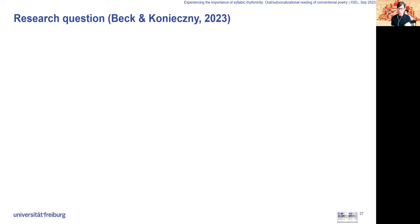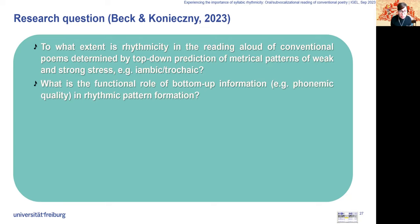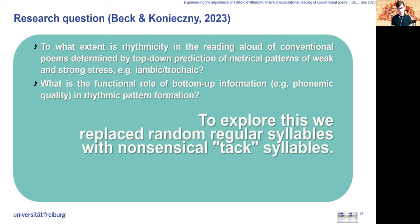We wanted to know to what extent is rhythmicity in the reading of conventional poems determined by top-down prediction of metrical patterns, and what's the functional role of bottom-up information in rhythmic pattern formation. To explore this, we replaced random regular syllables with nonsensical tag syllables. We use tag because it is often used also in musical training. How does this affect rhythmic reading? And how are these effects modulated by the subject's musical activity?